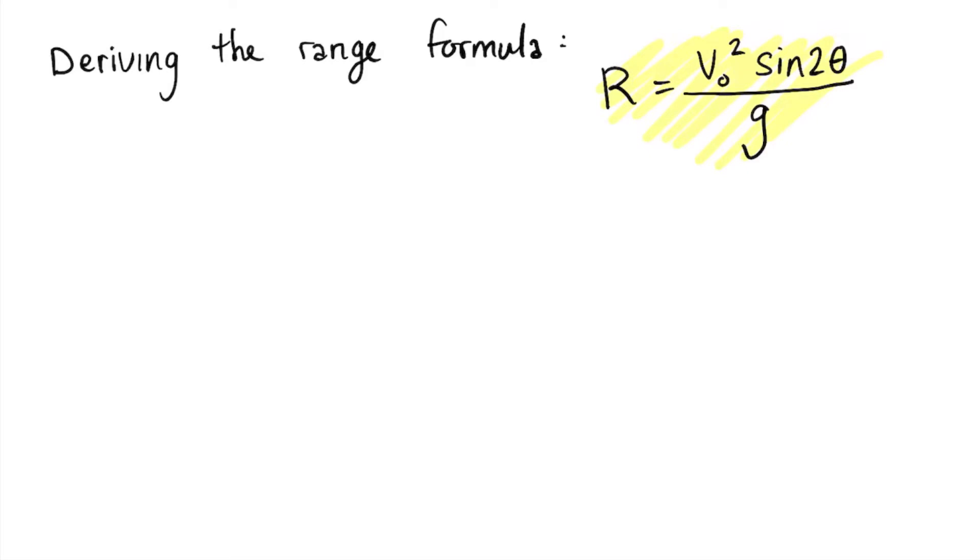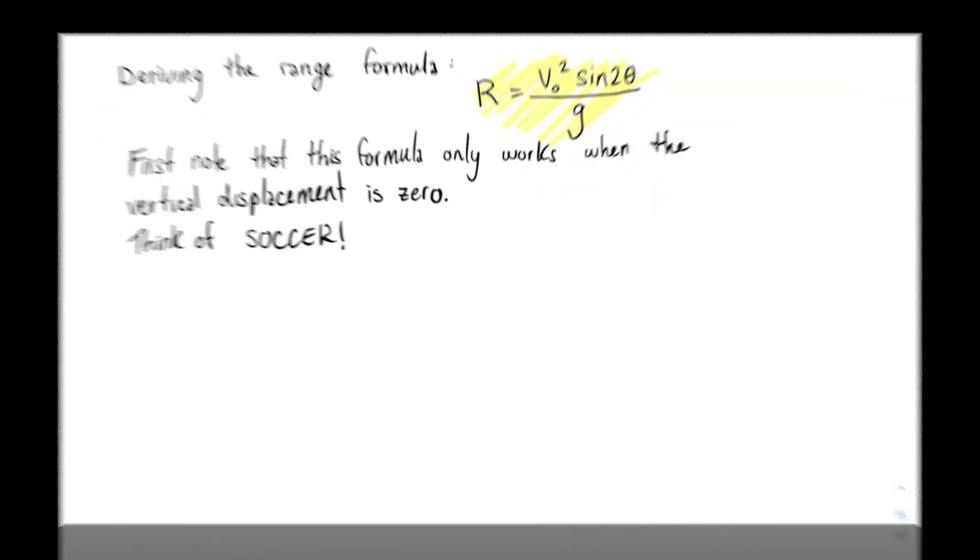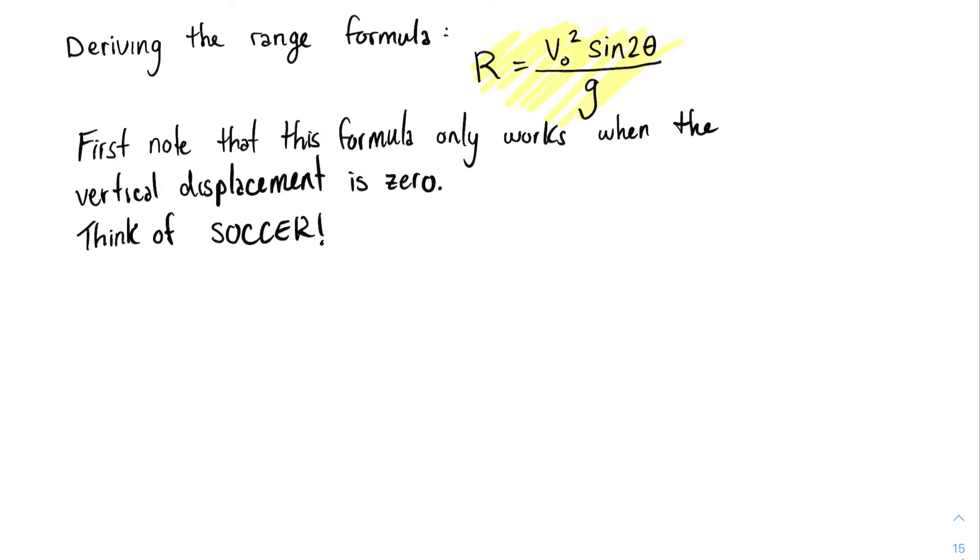Now, the best way to remember the range formula is through the game of soccer or football, depending on where you're living, because the range formula has its limitations. It only works for a specific set of conditions. The set of conditions that the range formula only works for is when the height difference from where it's launched to where it lands is zero. And as I mentioned, the best way to think about this formula is to think of the game of soccer.